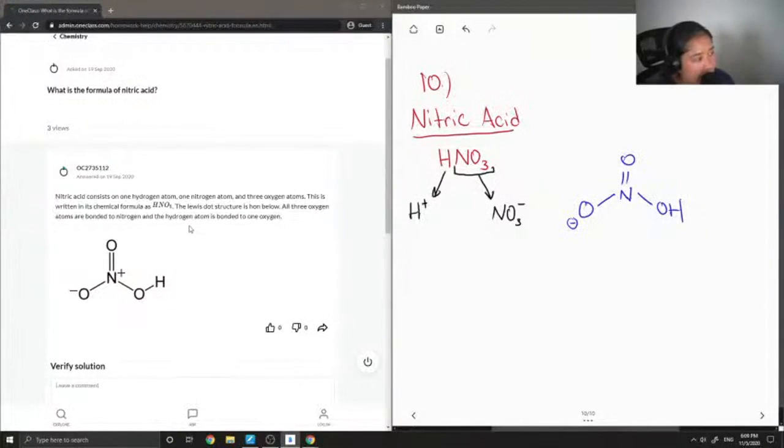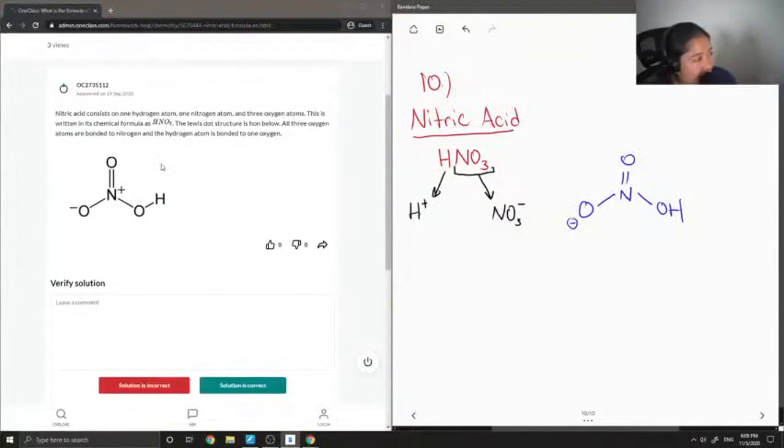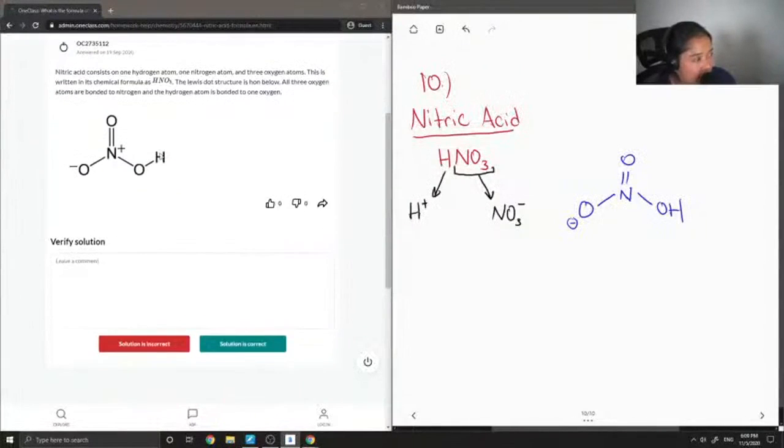So let's see what our junior tutor said. Nitric acid consists of one hydrogen atom, one nitrogen atom, and three oxygen atoms. This is written in its chemical formula as HNO3. The Lewis Dot structure is shown below. All three oxygen atoms are bonded to nitrogen and the hydrogen atom is bonded to one oxygen.